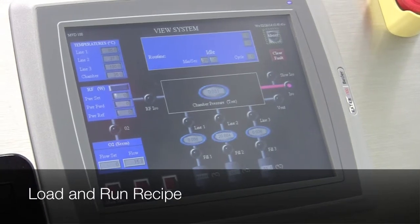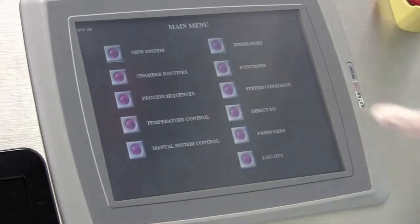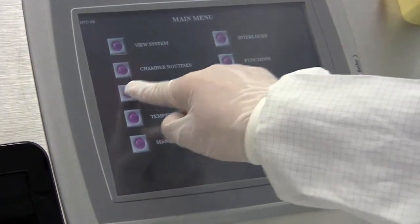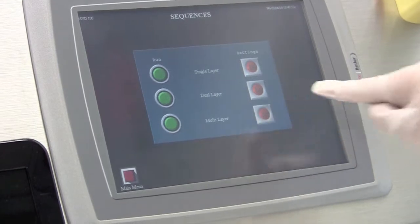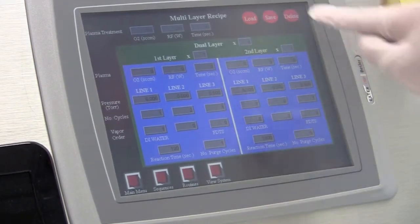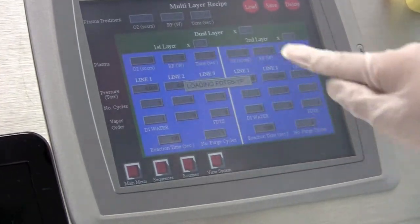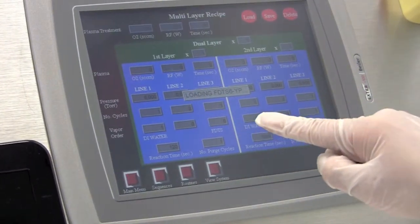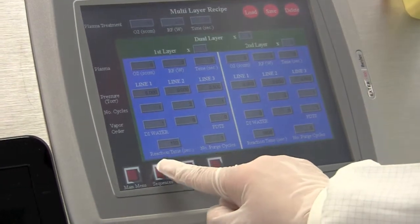So we go to the main menu, touch the process sequences, touch this orange button to load the recipes. Touch load, pick a recipe, and say yes. And then the recipe is loaded. Then we go back to the sequences and push the green button.